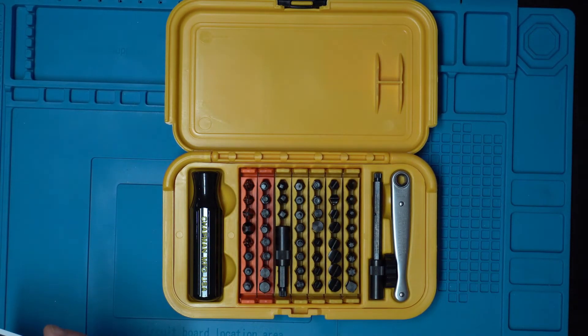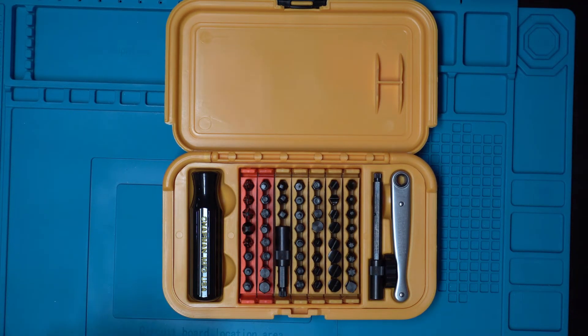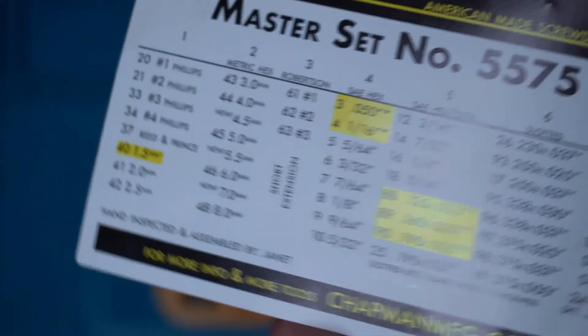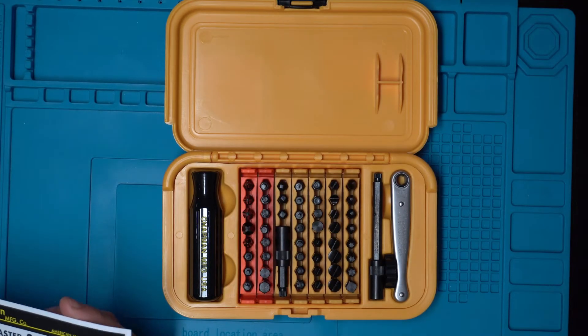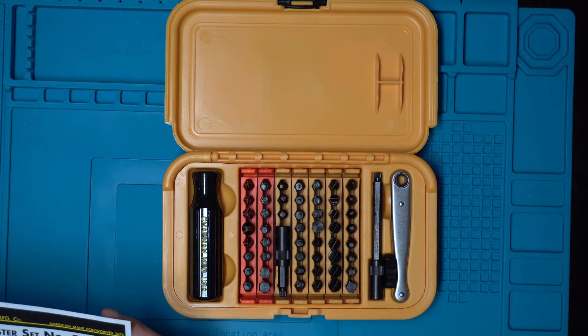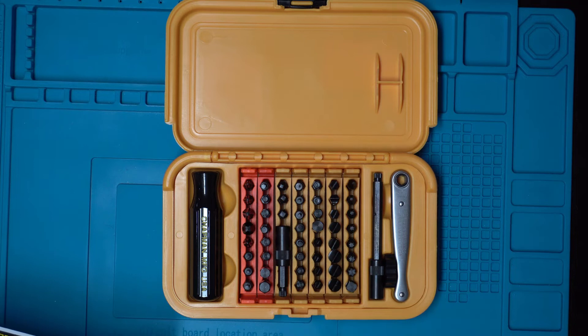This is a 56-piece screwdriver set, of which there are 51 different bits that come with the kit. This card, if it zooms in, gives you a breakdown of all the different types - there's slotted, Phillips, metric and standard bits, and star bits and Torx.